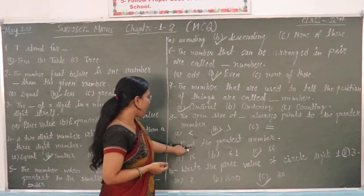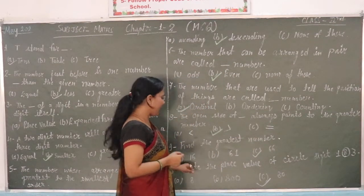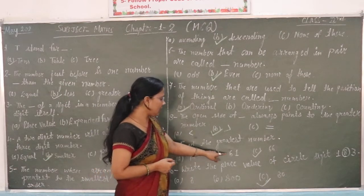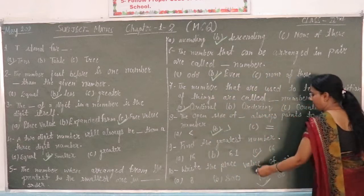Question 9: Find the greatest number. Options: 60, 60, 66. The answer is 66.